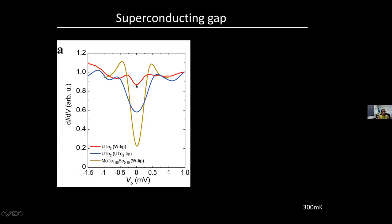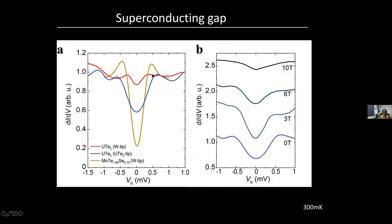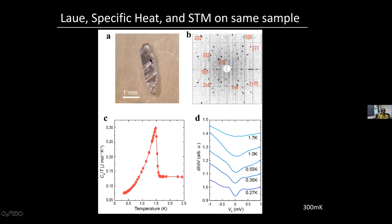A natural question is: how do you know this is a superconducting gap? It's particle-hole symmetric, but the coherence peaks aren't very sharp. We did quite a few experiments to verify this. One thing is that it does disappear with magnetic field — at 10 Tesla it's almost gone, which is very close to H_c2 along this direction. We also took a nice crystal, did Laue measurements to verify it's in the same phase, did specific heat measurements to see a nice superconducting transition, and then did STM on the same sample. STM spectra as a function of temperature show that corresponding to T_c, this gap disappears above about 1.7 Kelvin.